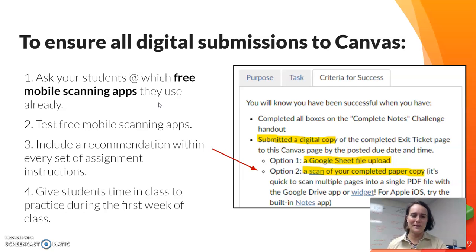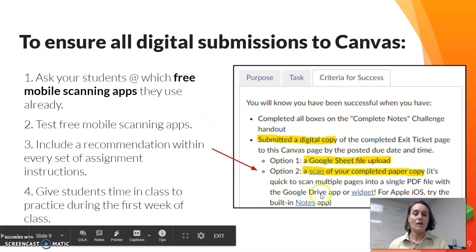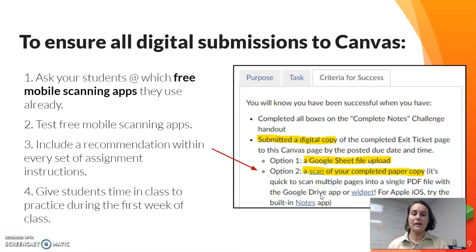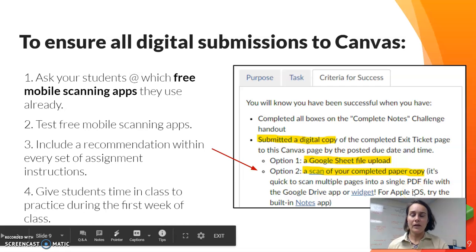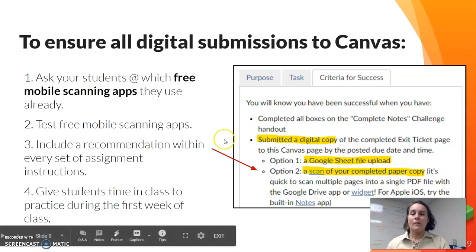Step one is actually a step we skipped in the first version: we didn't ask students if they were already familiar with any free scanning app. This past semester we realized students were using something called CamScanner. The two apps we test-drove ourselves and suggested are: the Google Drive app, which turns your phone into a mobile scanner, and the Apple Notes app, which can also serve as a scanner. The benefit of a scanner over a photo is that the scan tends to be a much cleaner image, and you can combine multiple pages into a single PDF — which is easier to manage on the instructor end.